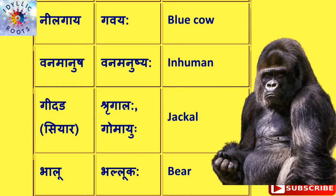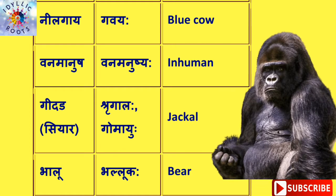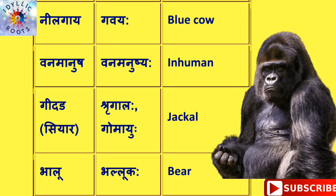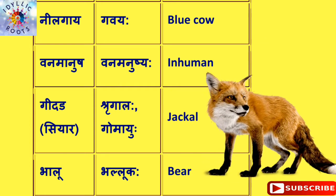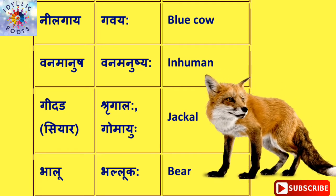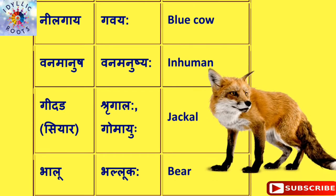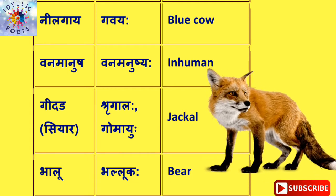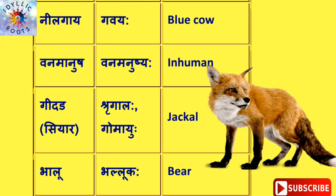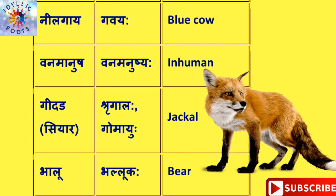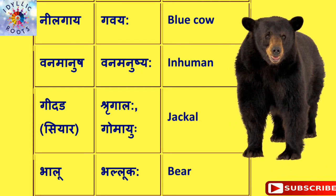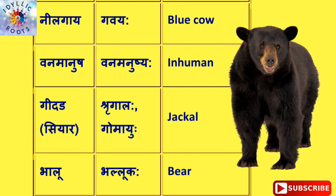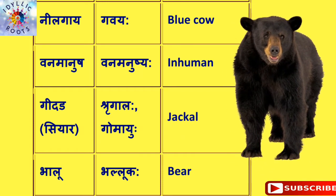वन मानुष को English में कहते हैं Inhuman और संस्कृत में कहते हैं वन मनुष्यः। गीदड़ यानी सियार को English में कहते हैं Jackal और संस्कृत में कहते हैं श्रृगालः। भालू को English में कहते हैं Bear और संस्कृत में कहते हैं भल्लूकः।